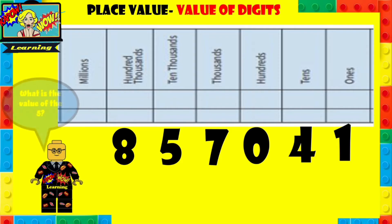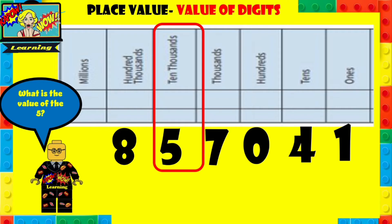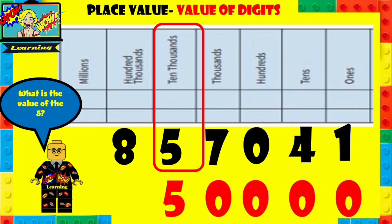Let's have a look at the next question. What is the value of the five? You can pause this, try to find the answer, and then when you have, play it to see if you got it correct. So the five is in the ten thousands. Five ten thousands would be — your answer should have been fifty thousand.